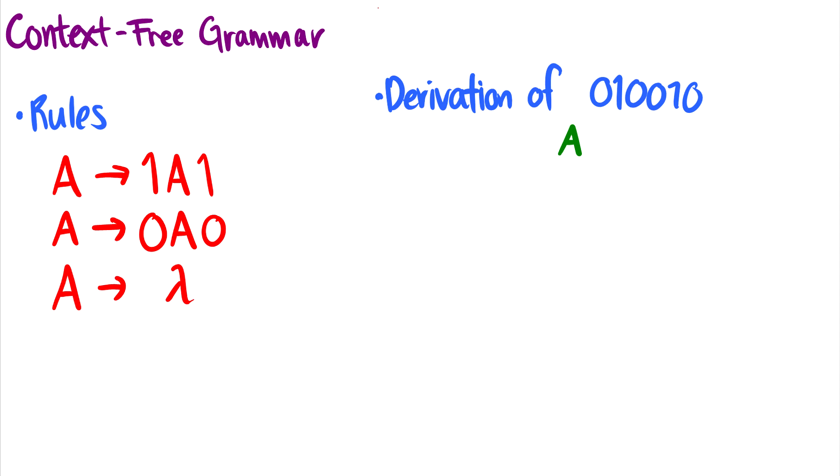For instance, I can do a derivation of the palindrome 010010 using three rules: A goes to 1A1, A goes to 0A0, and A goes to lambda, which is the empty string.